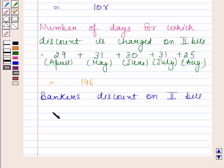This is equal to 4000 into 146 divided by 365 into R by 100. And this is equal to rupees 16R.